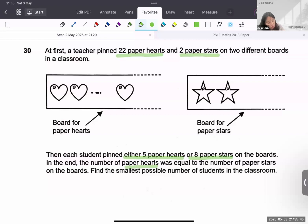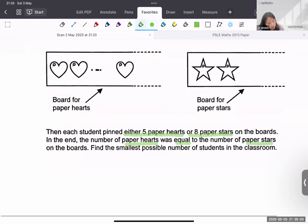And in the end, the paper hearts was equal to the number of paper stars on the boards. So find the smallest possible number.